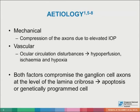The etiology of open angle glaucoma is widely accepted as being a combination of two main factors. Firstly, the mechanical compression of the axons due to elevated intraocular pressure, and secondly, the vascular component of ocular circulation disturbances, which leads to hypoperfusion, ischemia, and hypoxia. Both factors compromise the ganglion cell axons at the level of the lamina cribrosa, leading to apoptosis or genetically programmed death.